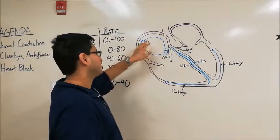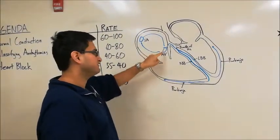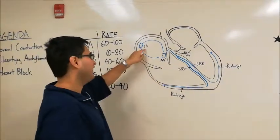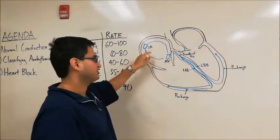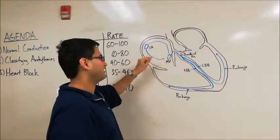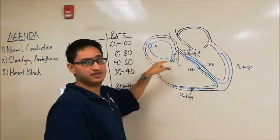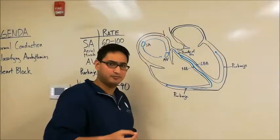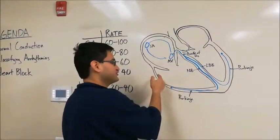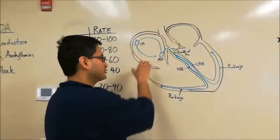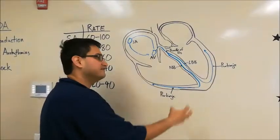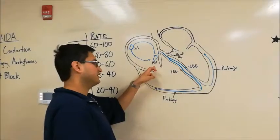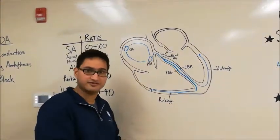From there, the impulse will spread through these tracts to the AV node, or the atrioventricular node. It's also important to note that the SA node will send impulses directly to atrial muscle here, as well as sending the impulses to the atrioventricular node. Now this node is very important because it slows down the conduction. This is important because the ventricles need to contract after the atria.